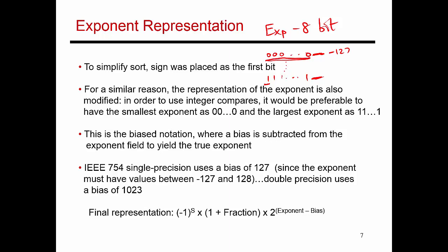As you keep increasing the binary numbers, it should go from minus 127 to minus 126, and so on, go through 0, then go to 1, keep increasing until all 1s represents the exponent 128. So what we want is the binary number 0 to really represent minus 127, and the binary number 255 to represent the exponent 128. So whatever value I get from the exponent field, I'm just going to subtract 127 from it to get the true exponent. If I want an exponent value of 2 to the power 0, what I should be putting into the exponent field is the number 127 — basically 0 followed by seven 1s.